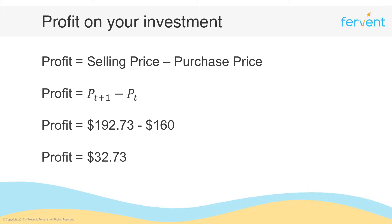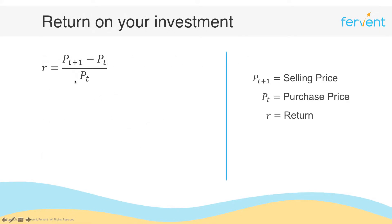To get the return, all we need to do is express that same $32.73 in percentage terms by expressing it relative to the original investment of $160. The return on a stock is calculated as p(t+1) minus p(t) divided by p(t). pt+1 is the selling price, pt is the purchase price, and we're scaling the difference between the two by the original purchase price to get the amount of money you make expressed in percentage terms.